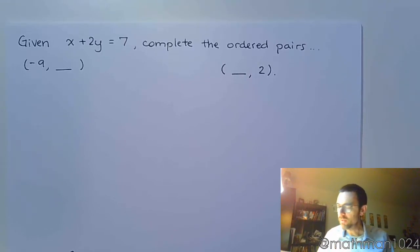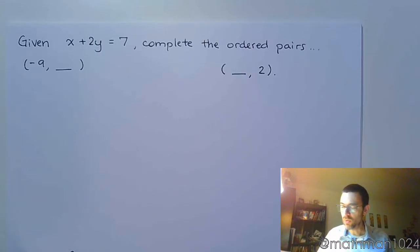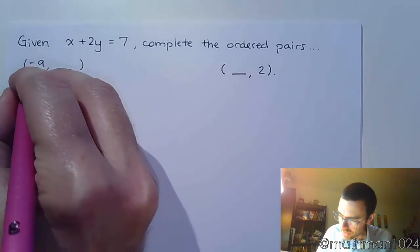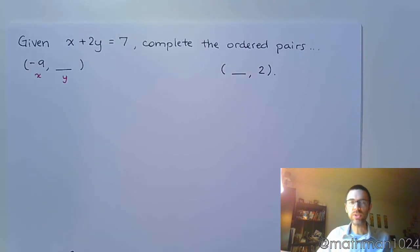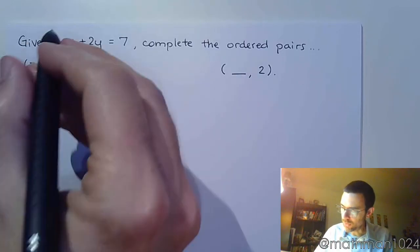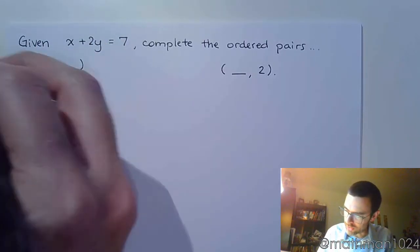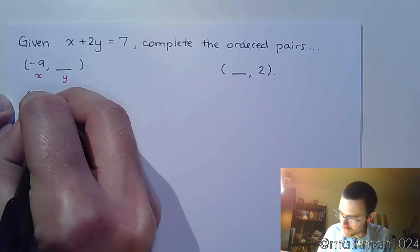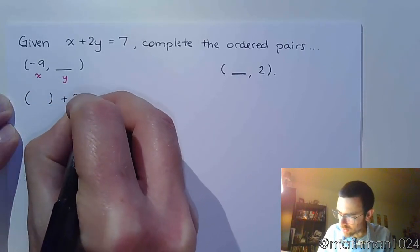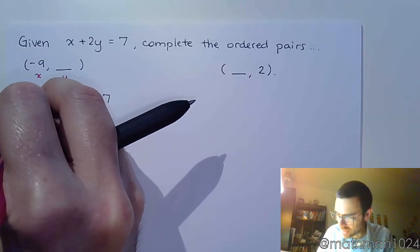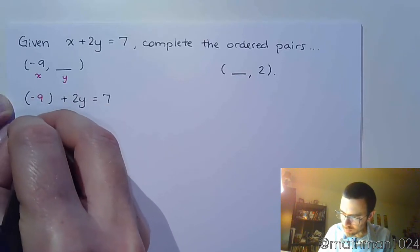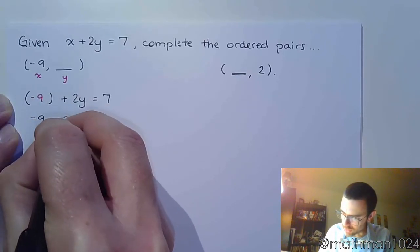So let's look at this. We have an equation, x plus 2y equals 7, and we need to complete the ordered pairs. This first one is telling us that x is negative 9, and we just need to find out what y is. It's a simple matter of plugging in what we know and solving for what we don't know. I'm going to replace x with negative 9 — I want to make sure I'm plugging in correctly — so that's negative 9 plus 2y equals 7.